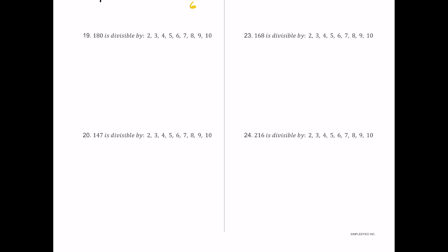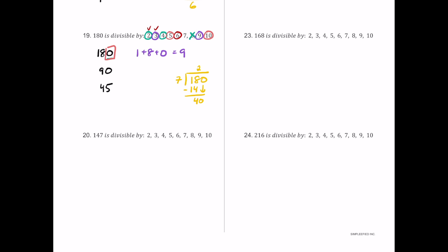For number 19, we have 180. It ends in an even number, so 2 works. Half is 90 — still even — so 4 works. Half of 90 is 45, which is odd, so 8 fails. The digit sum 1 plus 8 plus 0 is 9, a multiple of both 3 and 9, so they both work. Since 2 and 3 both work, 6 works. It ends in 0, so 5 and 10 both work. Dividing 180 by 7 leaves a remainder, so 7 fails.